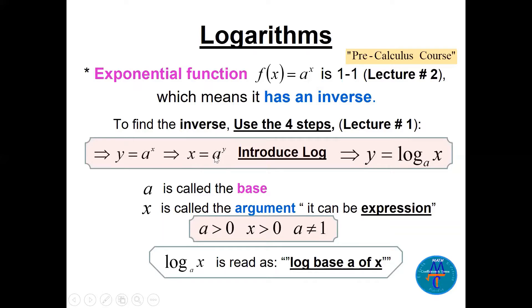Log base a of x is a number that, when placed as the power of a, gives you back x. Here, a is called the base and x is called the argument — this is an important word. The argument can be an expression like (x − 1). Also, a must be positive, x must be positive, and a cannot equal 1.